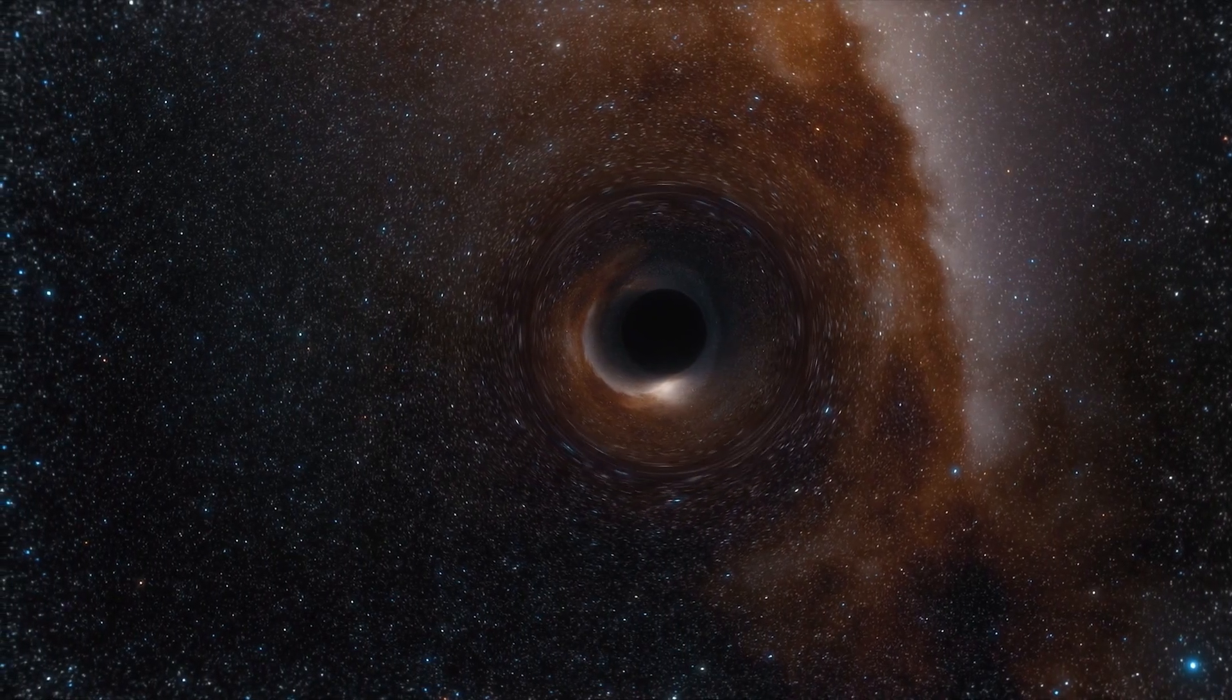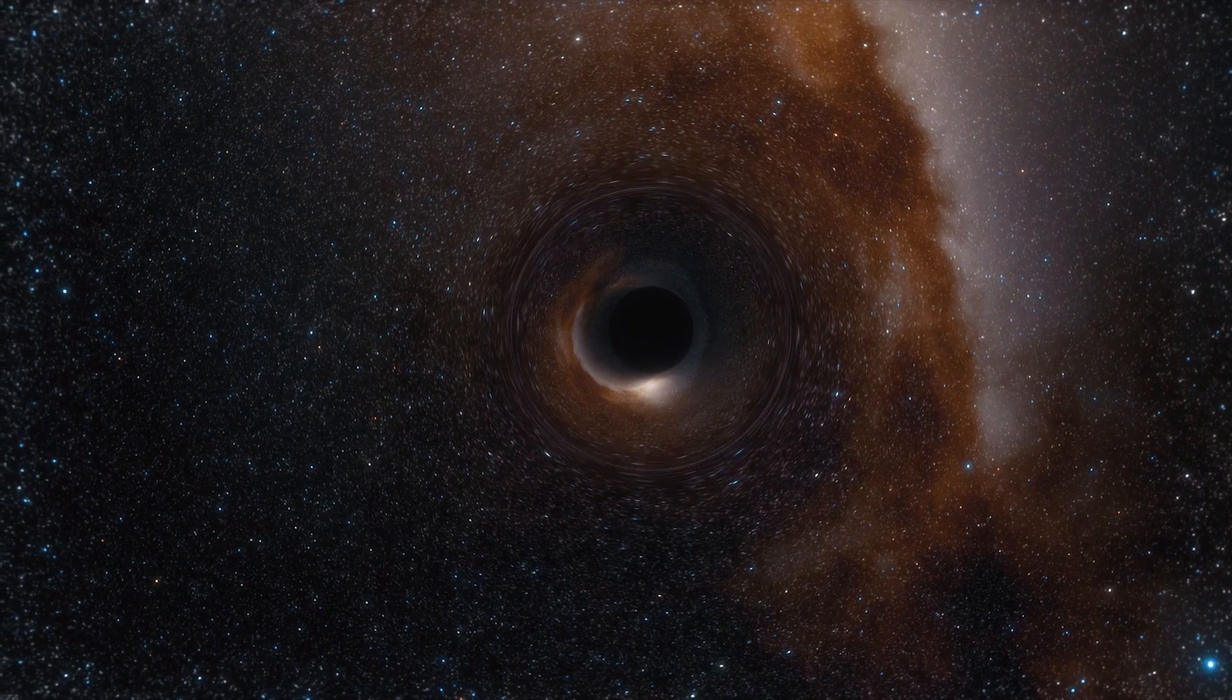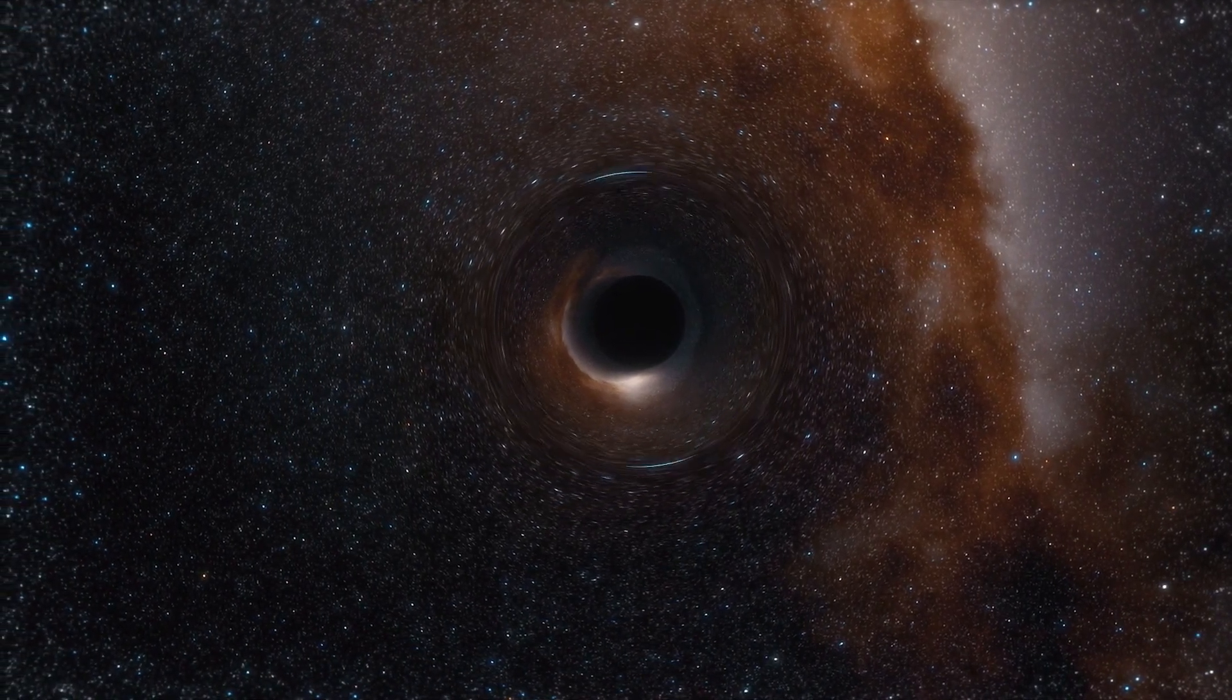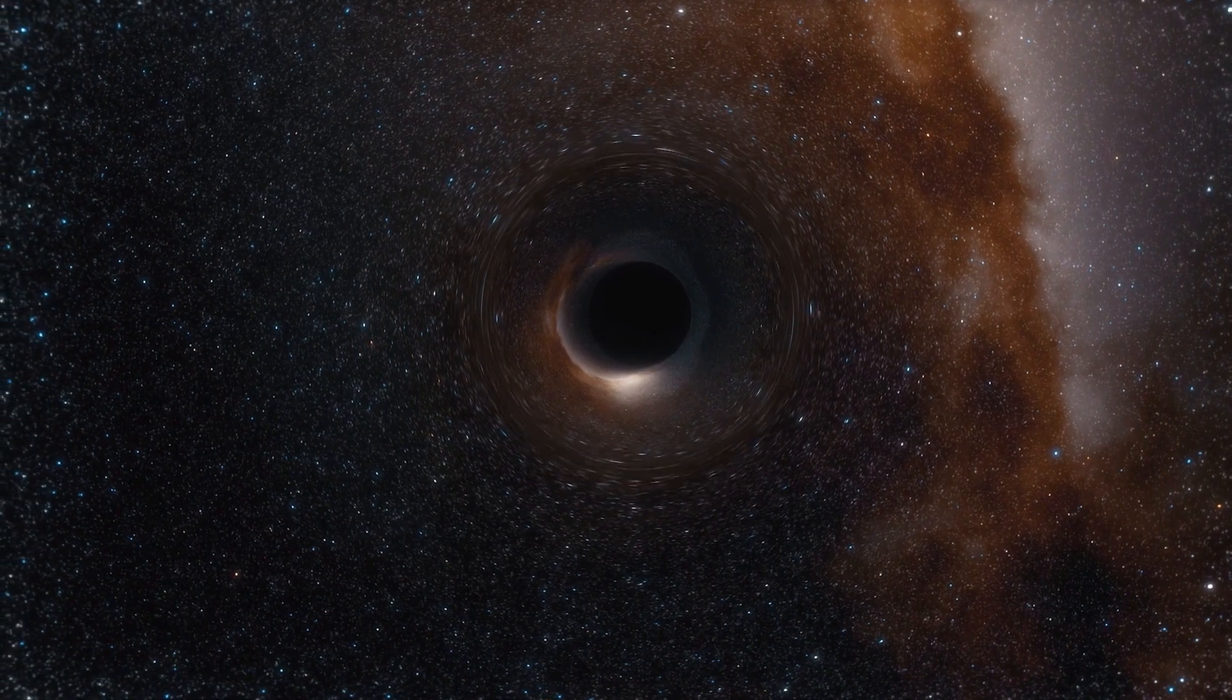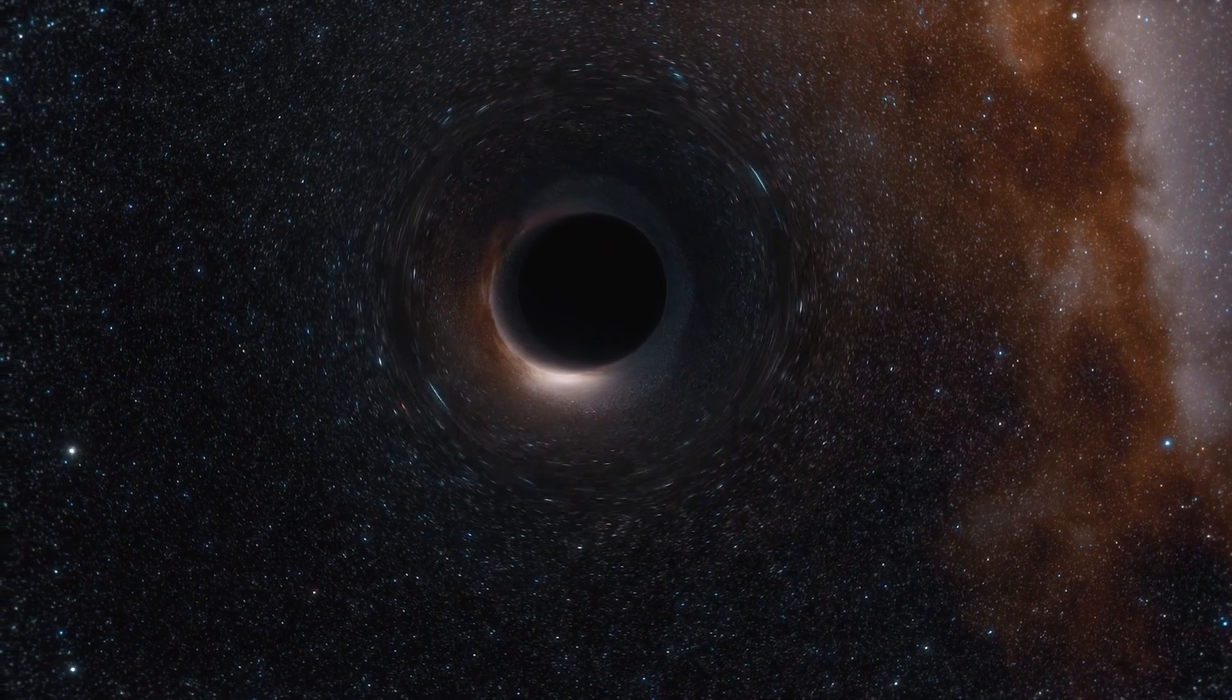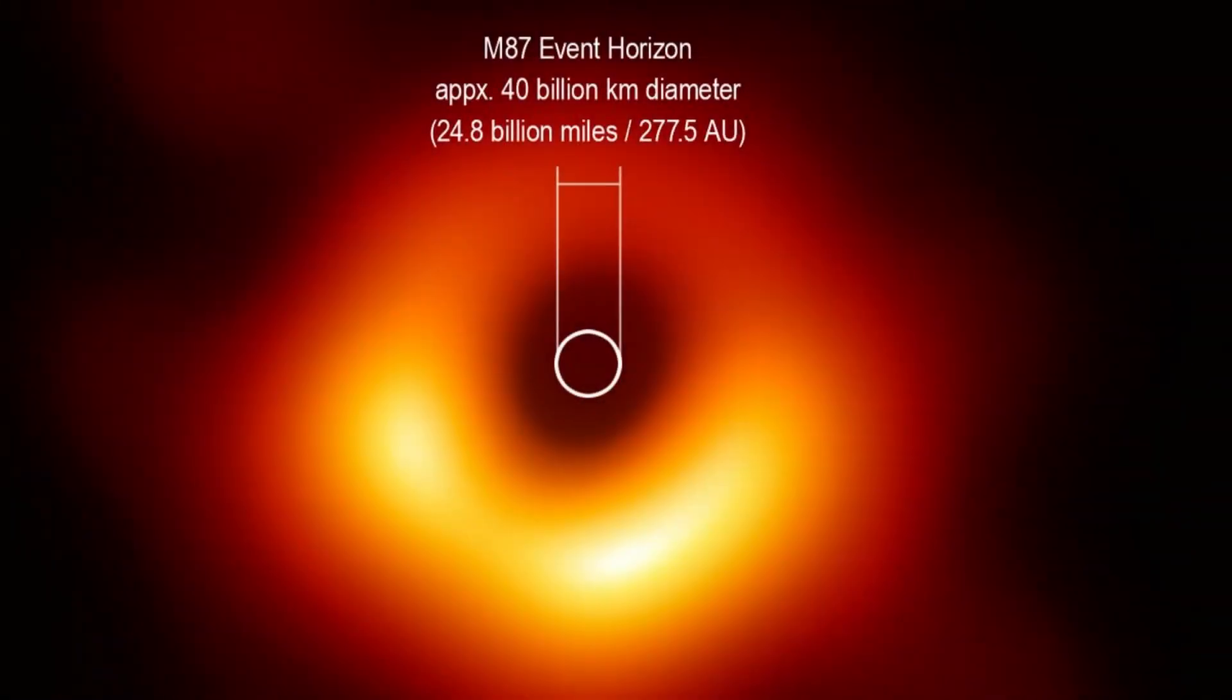The size of the event horizon is directly related to the mass of the black hole. For example, in the case of a stellar-mass black hole formed from the remnants of a massive star, the event horizon typically has a radius of a few kilometers. In contrast, supermassive black holes found at the centers of galaxies have much larger event horizons, stretching across millions to billions of kilometers.